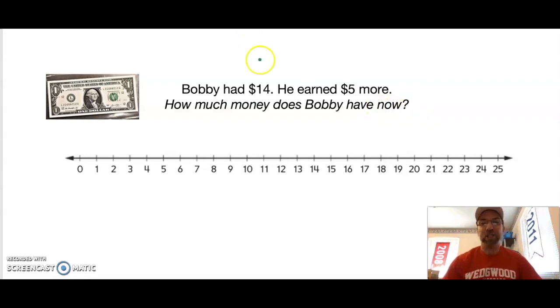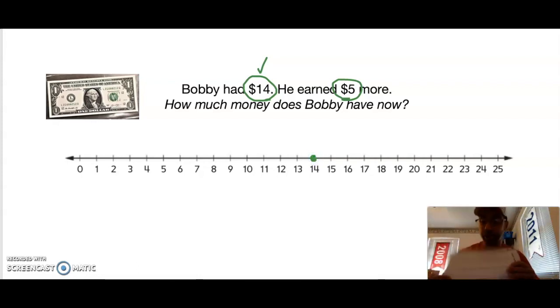I like to circle my numbers. I want to make sure I highlight those numbers so I can see them really well. I always like to make a note of which number is greater. Is 14 greater or is 5 greater? Well in this case, 14 is the greater number, so I like to start by putting a dot on my number line where 14 is located, right on my tick mark.